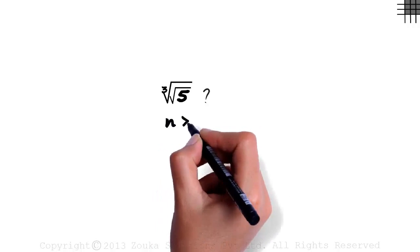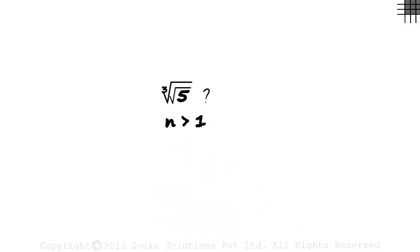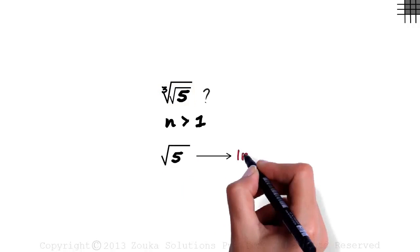Now we come to the last and the most interesting concept in this video. Consider the number cube root of square root of 5. Is this a SIRD? Let's think of the conditions. The order has to be a natural number greater than 1. This condition is satisfied. But what's the base here? It's square root of 5. The base is irrational.